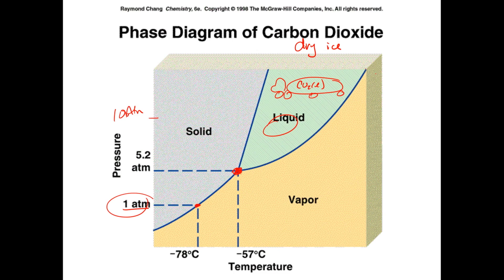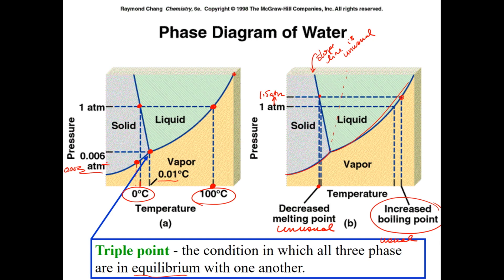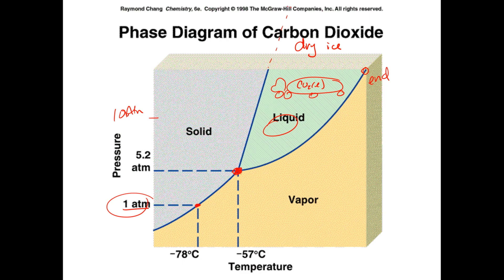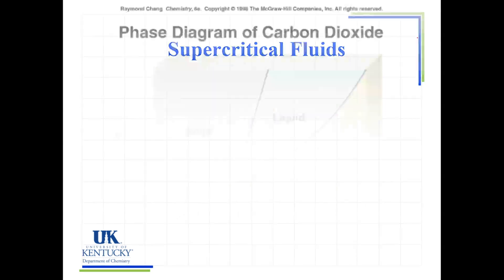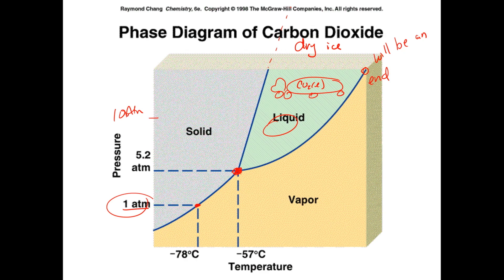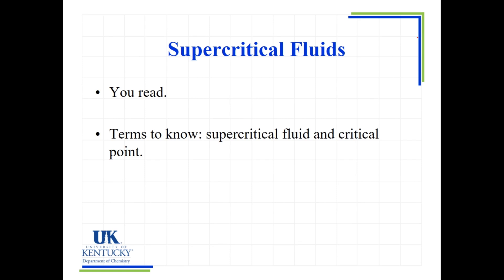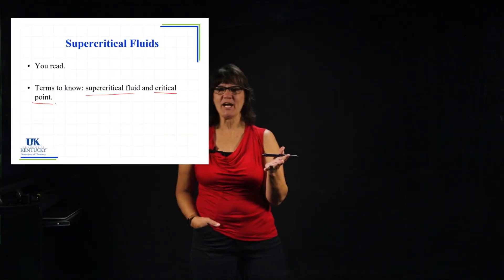The liquid-vapor phase boundary line does end at some point — that endpoint is called the critical point. Beyond that point, when you get the pressure above where that line ends, the phase boundary between liquid and vapor disappears and you enter what's called a supercritical fluid. I want you to read about supercritical fluids and the critical point in your textbook — I'll provide the reference.